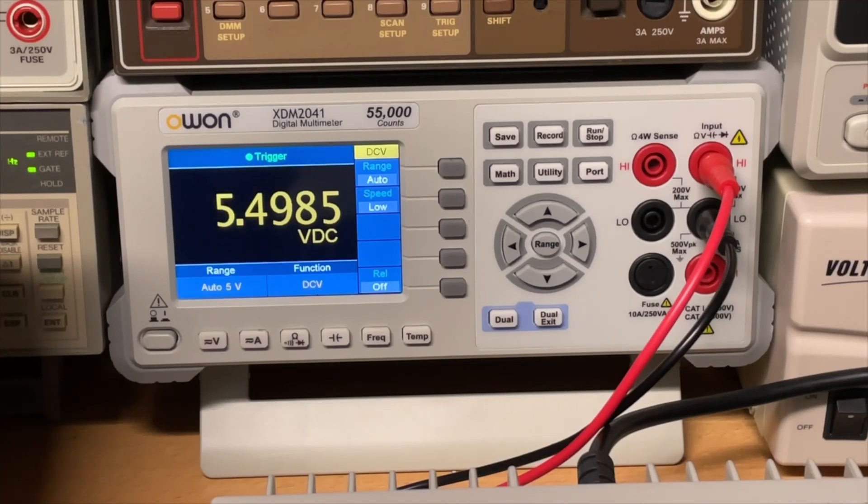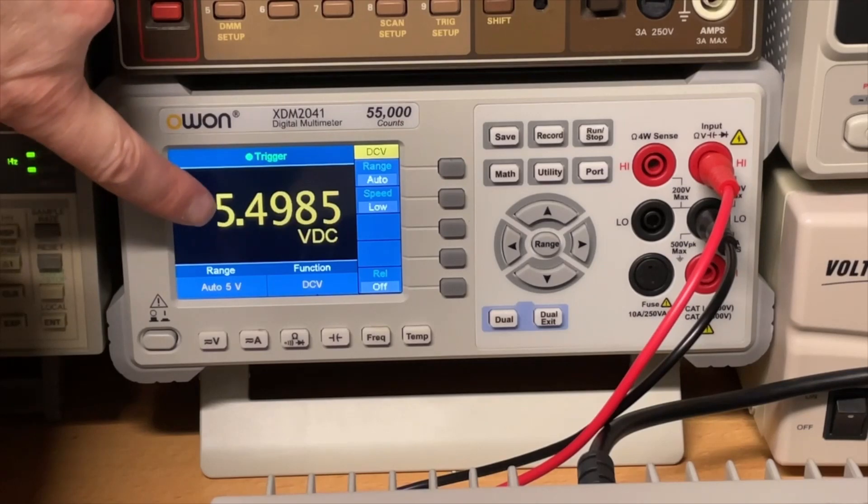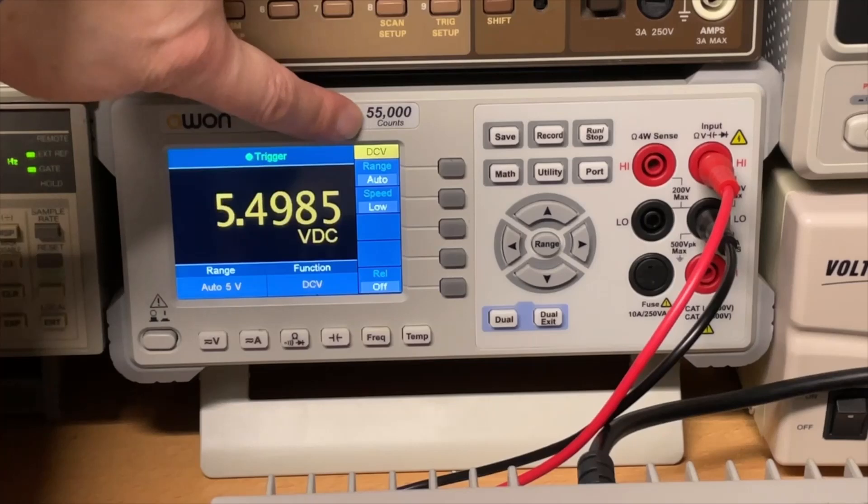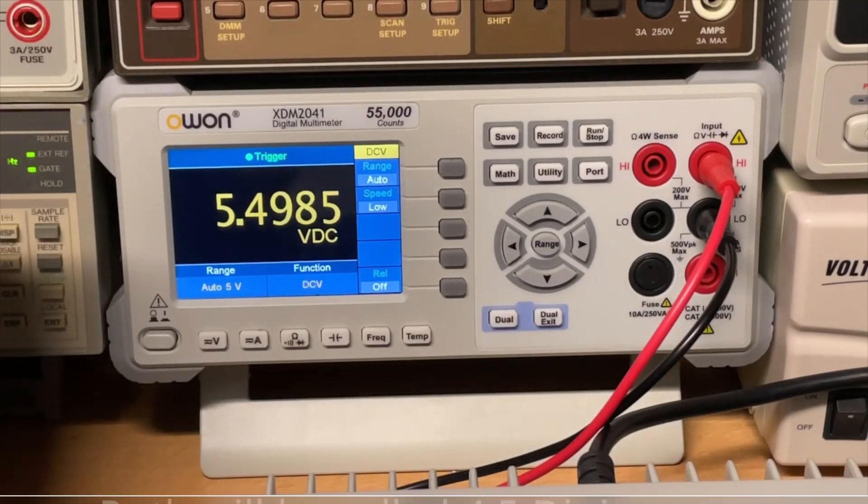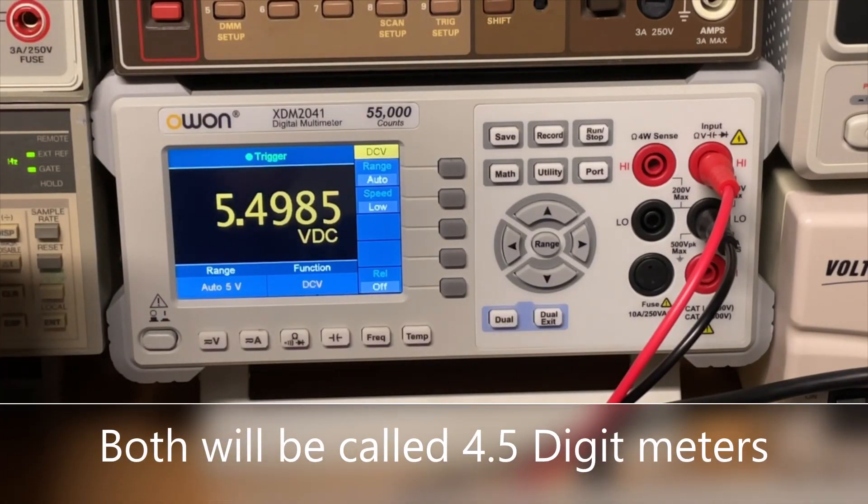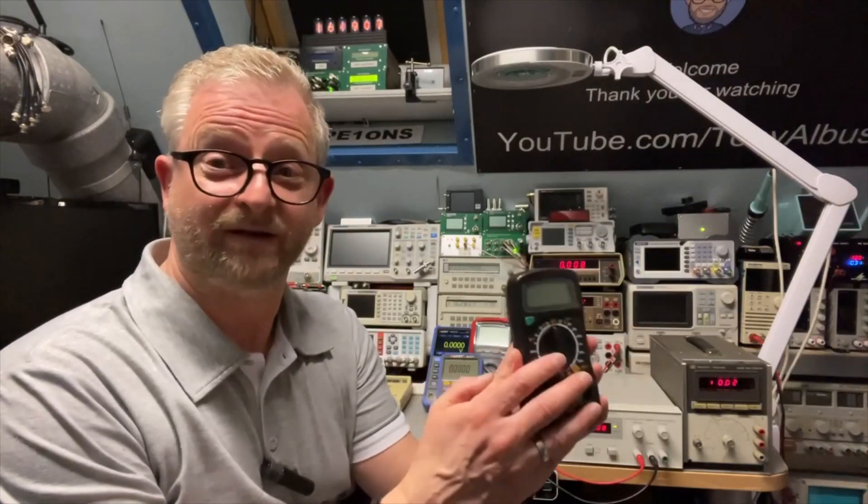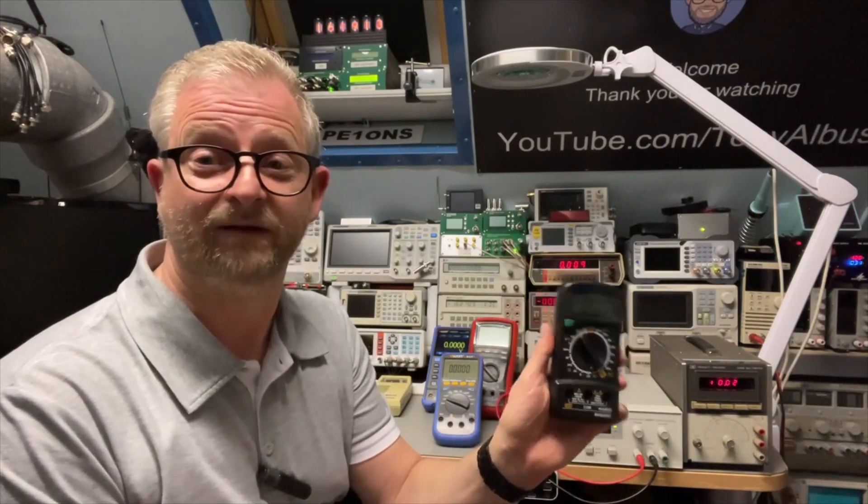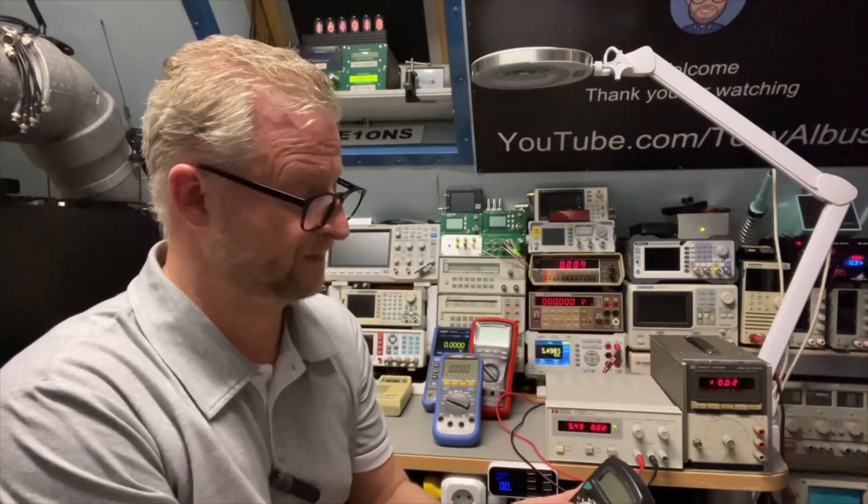And this is important because if you buy a multimeter with four and a half digits and it is only 20,000 counts, then you can only do up to two volts. You can have all five digits. But with this one, because it is 55,000 counts, it can go up to five volts. And that's why it's also important to understand what are these counts. So, these little multimeters, which are three and a half digits, you can switch them from two to 20 to 200. So, this one is 1,999 or 2,000 counts. Very simple.